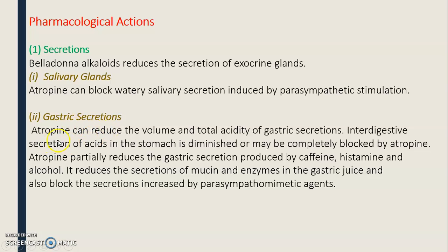Regarding gastric secretions, atropine can reduce the volume and total acidity of gastric secretions. The interdigestive secretion of acids in the stomach is diminished or may be completely blocked by atropine. Atropine partially reduces the gastric secretions produced by caffeine, histamine, and alcohol. It also reduces the secretion of mucin and enzymes in the gastric juice, and blocks secretion increased by parasympathomimetic agents.